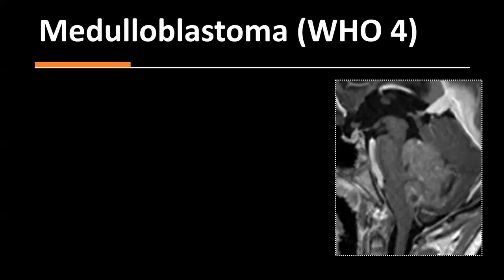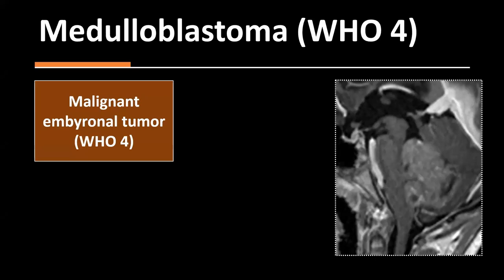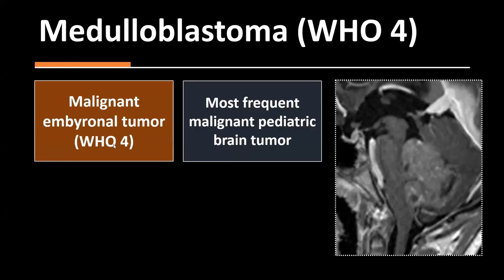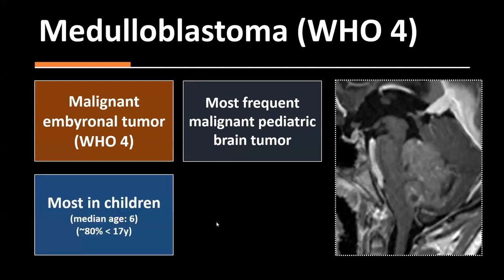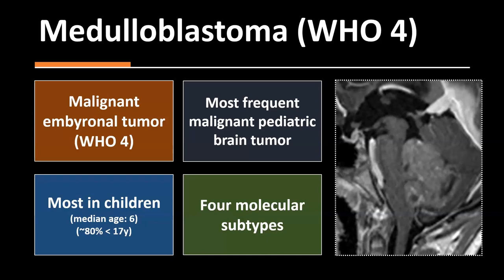Medulloblastoma is a very malignant tumor belonging to the embryonal tumor group. Embryonal tumors are derived from embryonal cells that undergo malignant transformation and are always WHO grade 4. Medulloblastoma is the most frequent malignant pediatric brain tumor — you will encounter it in daily practice. It can occur at all ages, but 80% are found in patients under 17 with a median age of about six, so mainly toddlers and school-age children. There are four molecular subtypes with preferential locations and age groups.